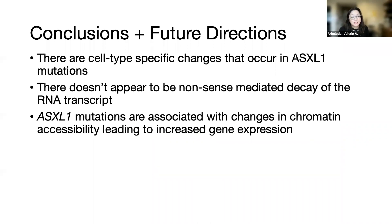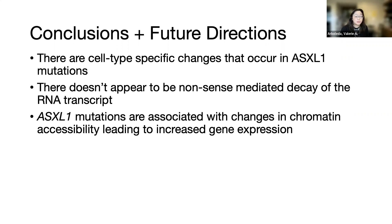Some of our conclusions and future directions: we see cell-type specific changes in ASXL1 mutations, but we don't actually see a change in the transcript. We think the mutant transcript is being expressed and just regulating things in the cell during development. We know that the mutations are associated with chromatin accessibility — changes in how open or closed the DNA in the nucleus is — and that's associated with increased gene expression. Trying to pinpoint which changes are the most critical is going to be our next step in the lab.